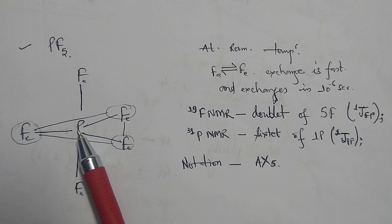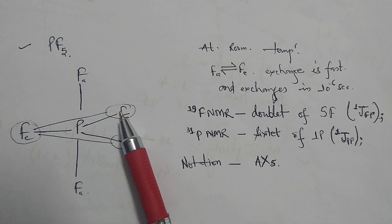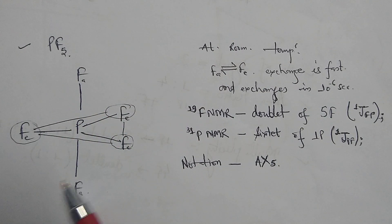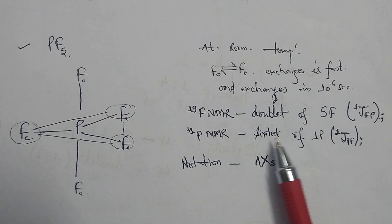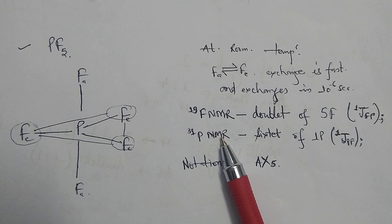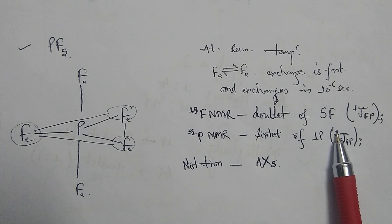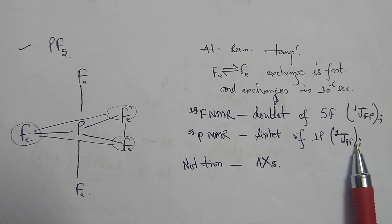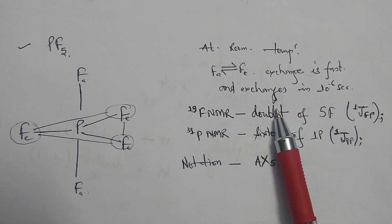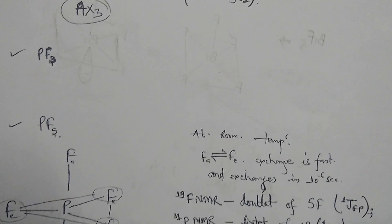When we do the 31P NMR at room temperature, the phosphorus couples with all 5 fluorines by one bond, so counting 1, 2, 3, 4, 5 — adding one gives a sextet signal. Therefore the 31P NMR gives a sextet signal for the one phosphorus with coupling constant 1JPF. The Pople notation for this molecule at room temperature is AX5.